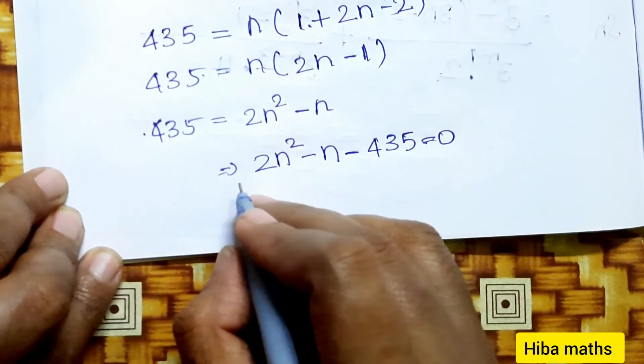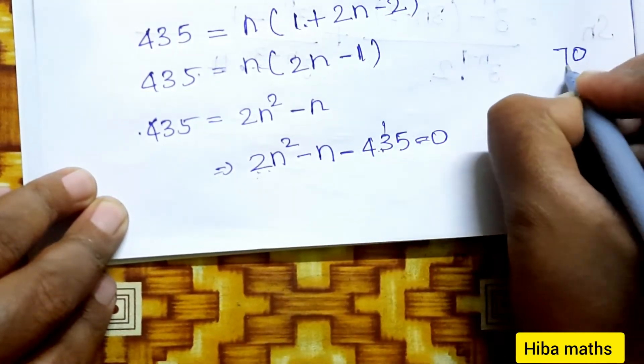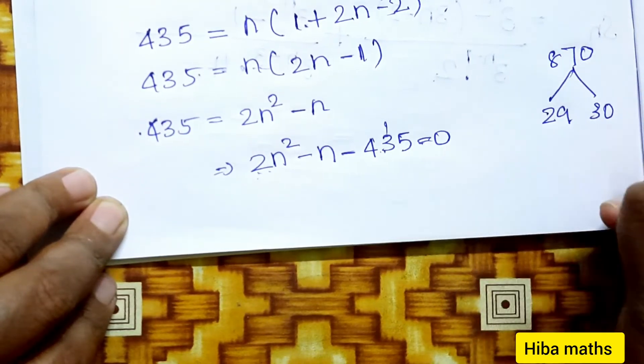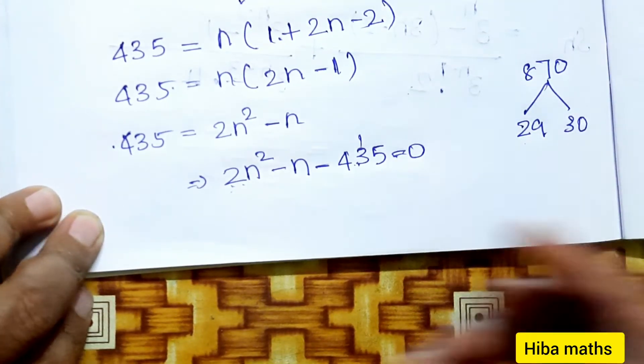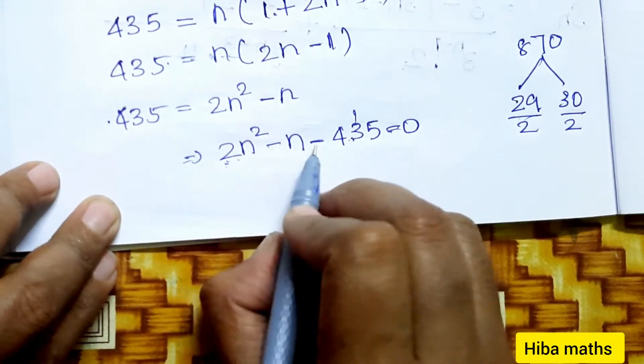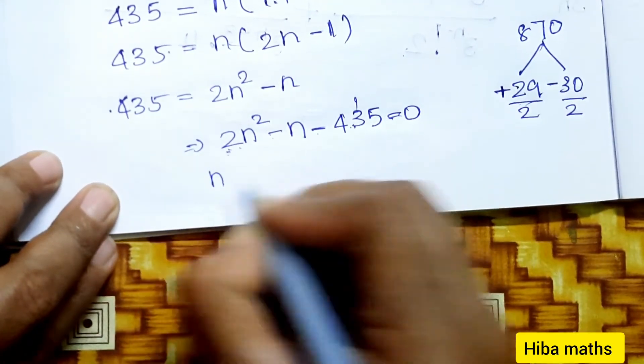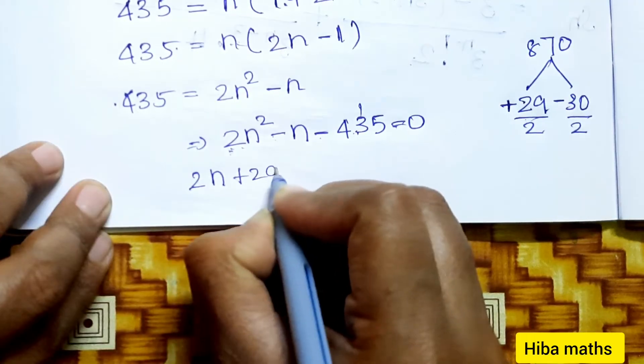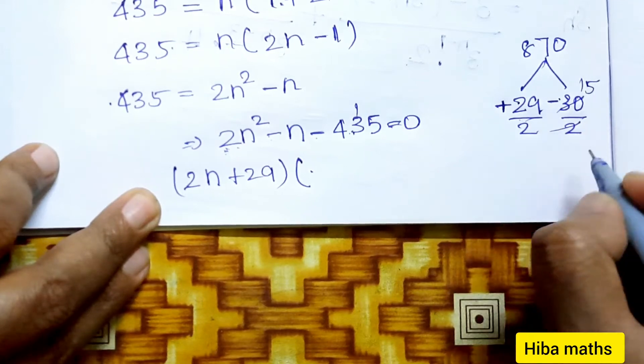Now factorization: 2×435 = 870 = 29×30. We need 29 and 30 such that their difference is 1. Factoring: (2n + 29)(n - 15) = 0.